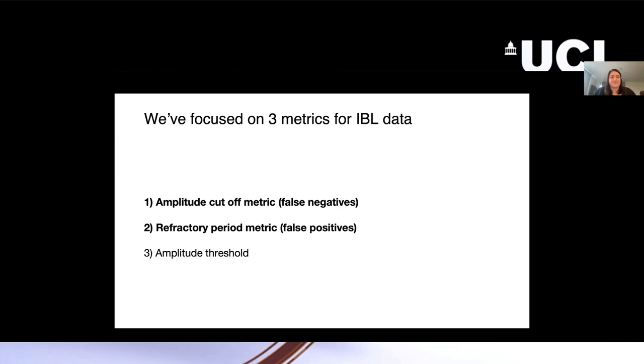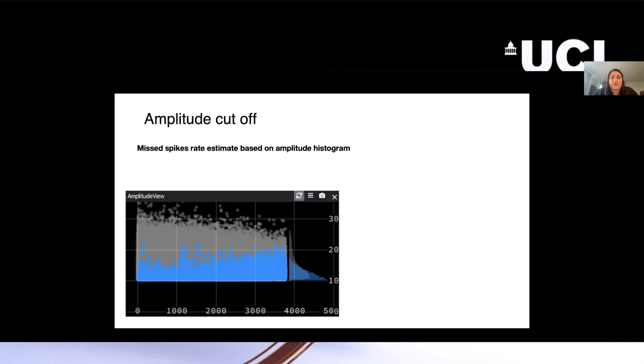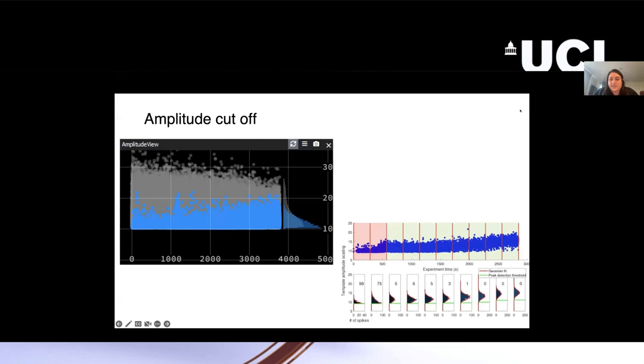The first amplitude cutoff metric is to look at this idea of missed spikes. The estimate that you have is lower because of missed spikes based on your amplitude histogram. One way that people historically have dealt with this is to fit a Gaussian. This is a very similar example to what Julie just showed, of fitting a Gaussian to the histogram of spikes across time. You can do this in different epochs as Julie mentioned, or you can do this overall.